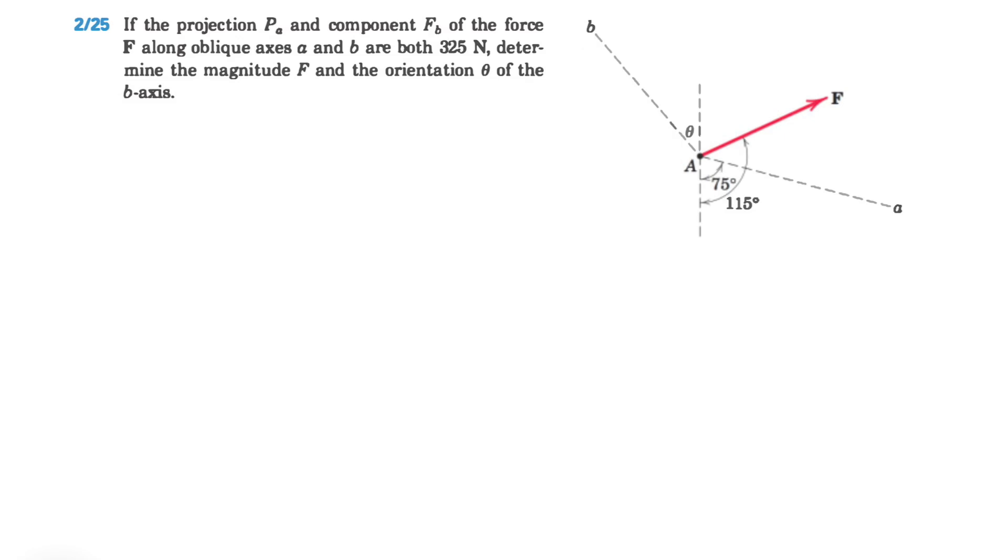One of the givens is the projection Pa. Let's show that here. To find Pa, we need to find this angle right here, which we can easily figure out. It will be 115 minus 75, which is 40 degrees.